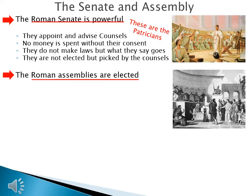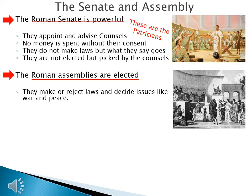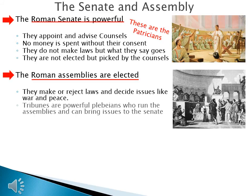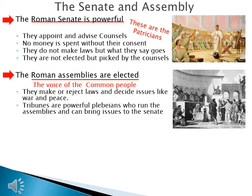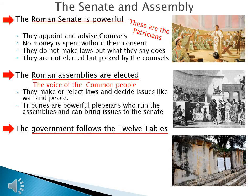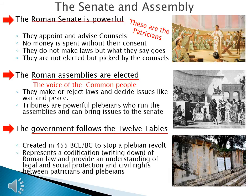The Roman assemblies are elected. They make or reject laws and decide issues like war and peace. They have tribunes — powerful plebeians who run the assemblies and can bring issues to the senate. This is the voice of the common people: they make the laws because they're going to have to live under them, and they decide on war and peace because they will ultimately fight the battles. All government officials must follow the Twelve Tables, created in 455 BCE to stop a plebeian revolt. They represent a codification of Roman law and provide an understanding of legal and social protection and civil rights between patricians and plebeians.